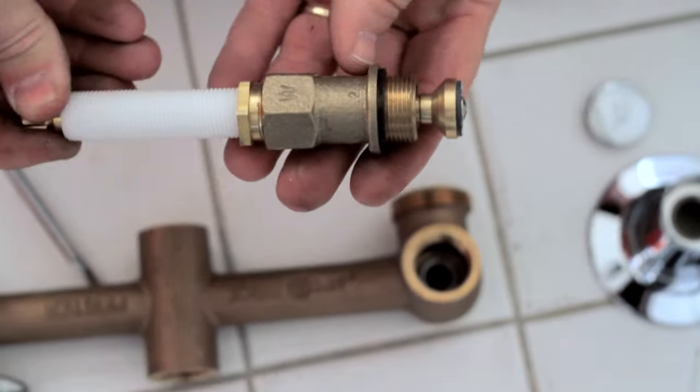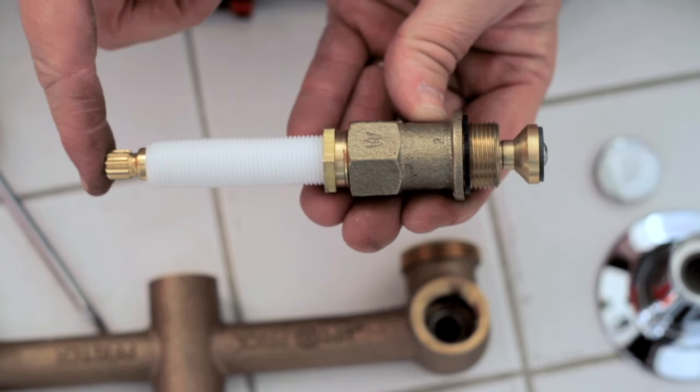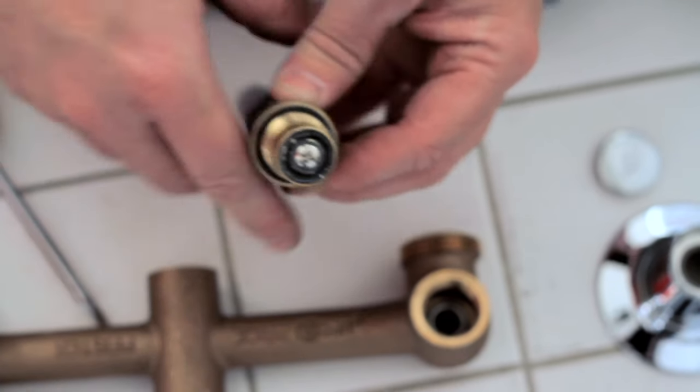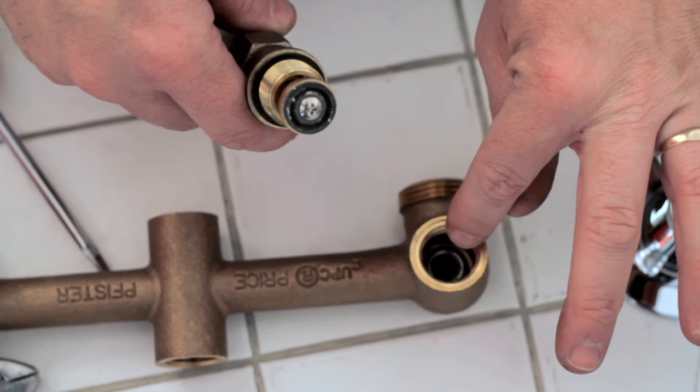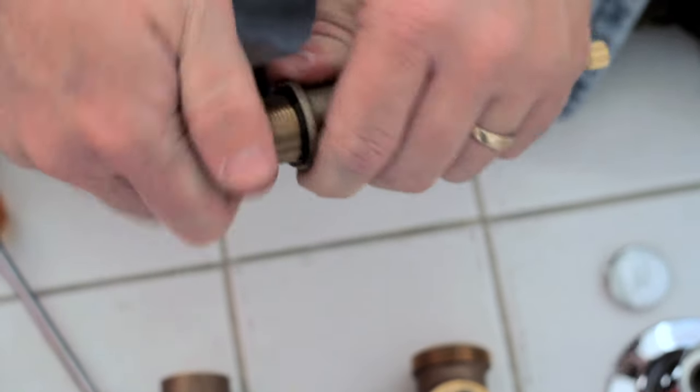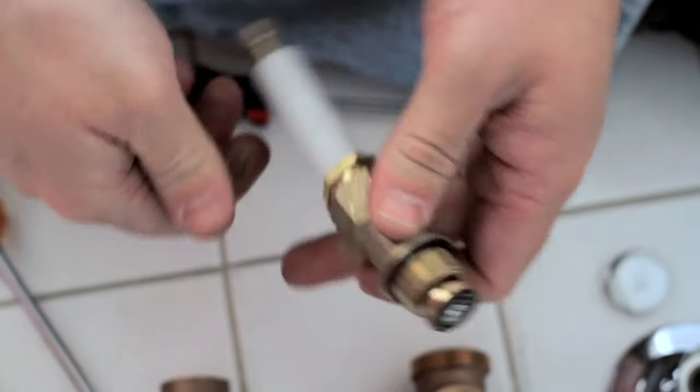Now, that right there is actually what's going to make your faucet leak. This whole piece needs to be replaced or rebuilt. Some of them you can replace a washer. There's also what we call a seat down inside of there. But that is actually what makes a faucet leak, not necessarily the handle being loose.